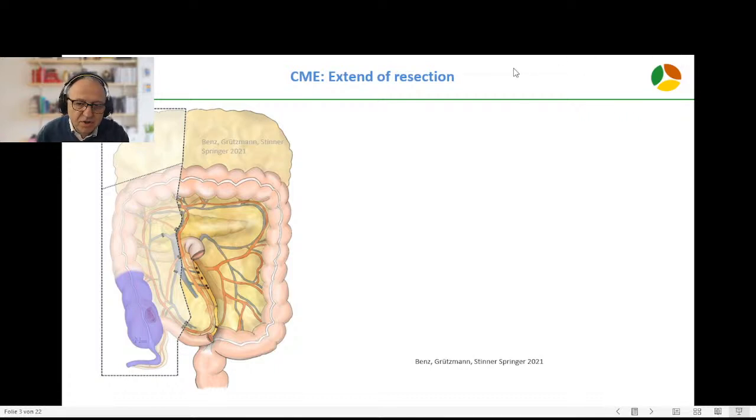The extent of CME resection is shown on this slide, described by Hohenberger in 2009. The whole mesocolon should be excised for that kind of tumor just down to the mesenteric vessels, taking all the lymphatic tissue on block of the mesenteric root up to the pancreas. They're dividing the right branch of the middle colic artery, dividing the superior right colic vein, and then removing the whole thing on block.